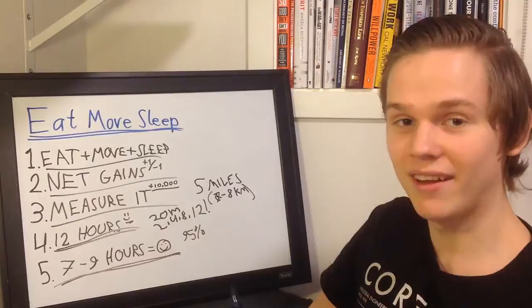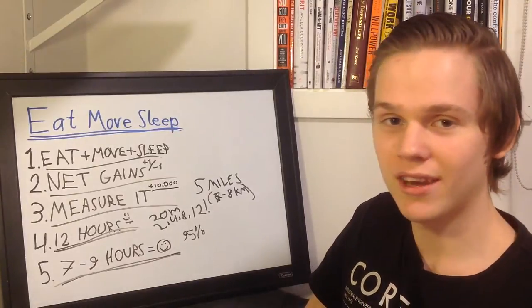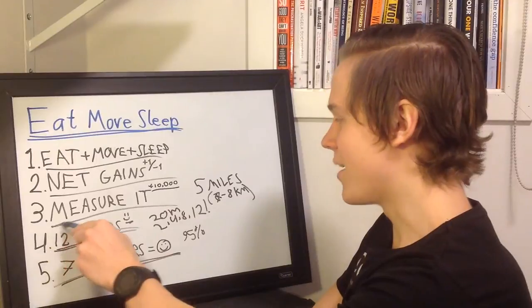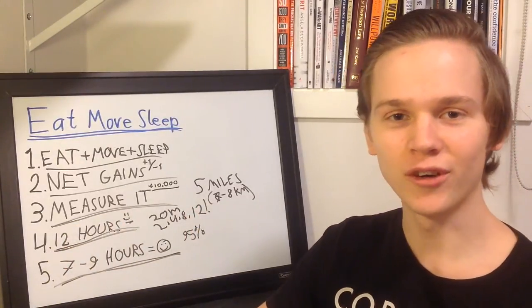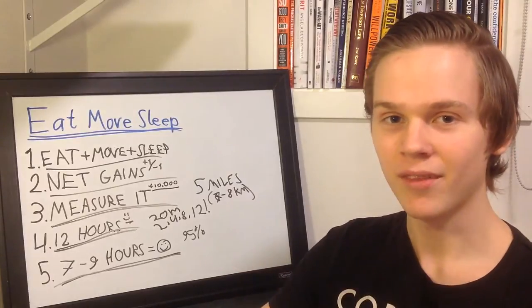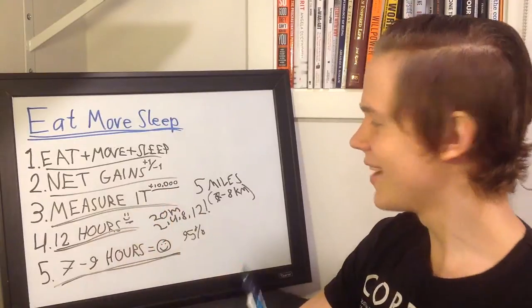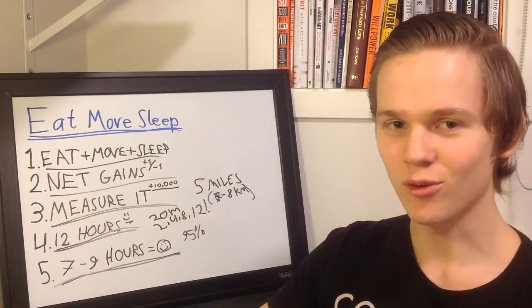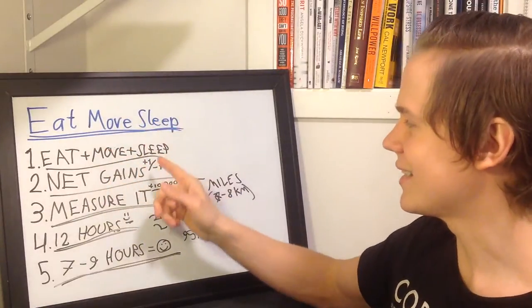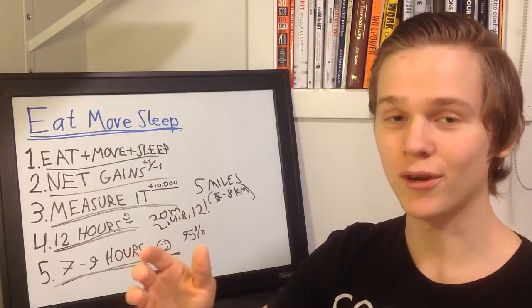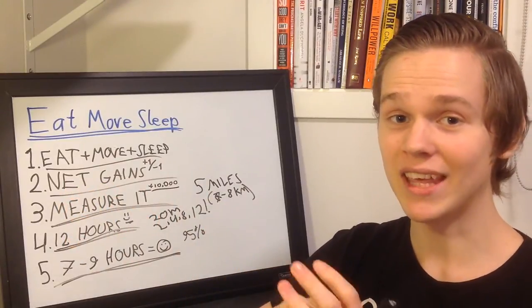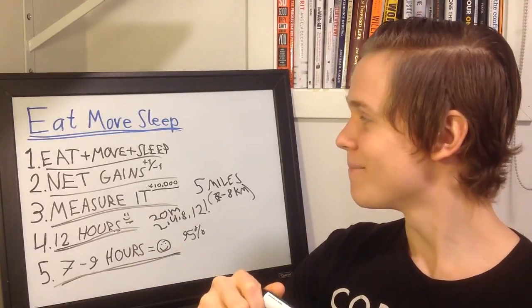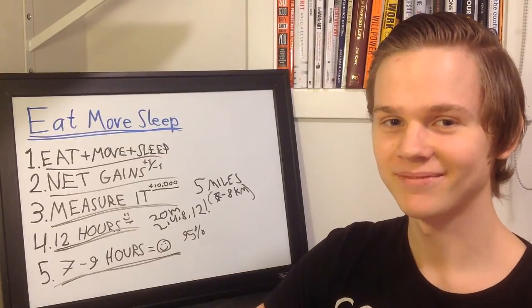12 hours? If you want a 12 hour mood boost, work out during the morning or during the day. 20 minute moderate intensity workout is all you need, but more is better. Measure it? Simply measuring improves something. Why don't you use it for your movement? Measure 10,000 steps each day, or any other way you want. Net gains? Plus one, minus one. Everything you put into your mouth is either a net gain or a net loss. Choose wisely. Eat plus move plus sleep. You want to improve all of them at the same time. If you don't get enough sleep, we will eat worse and move less. If we eat crappy, we might move less and sleep worse. If we move less, we might eat crappy and sleep worse.